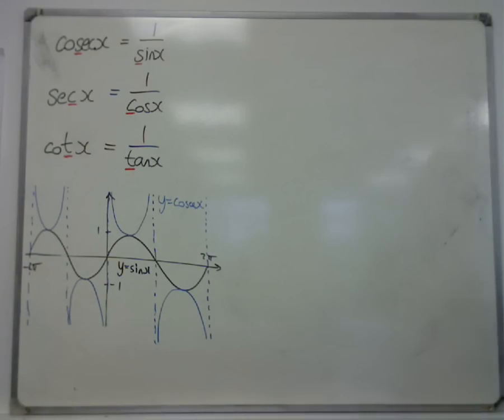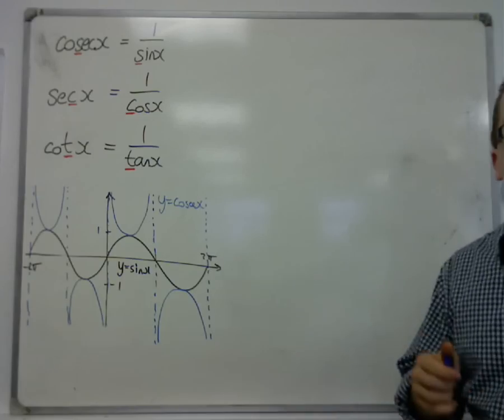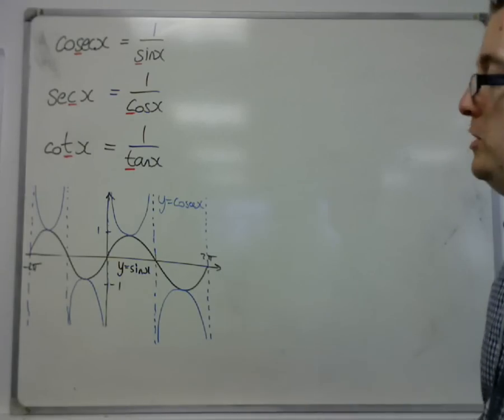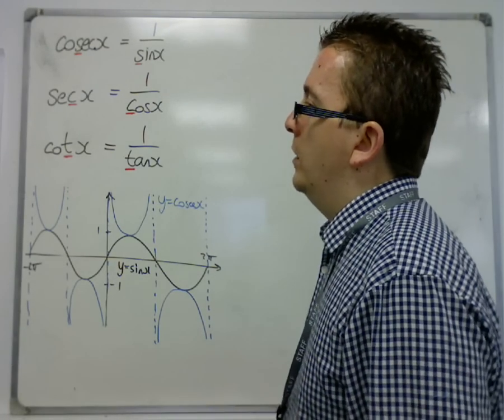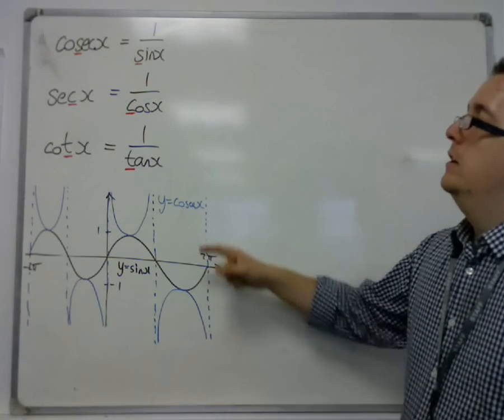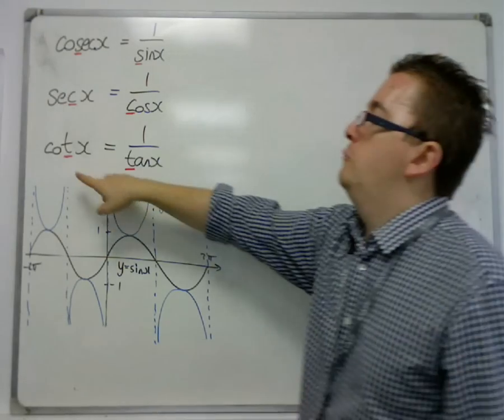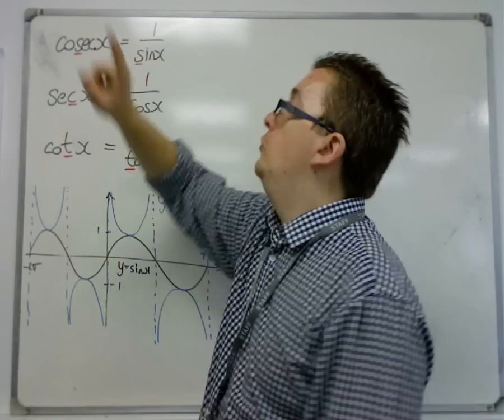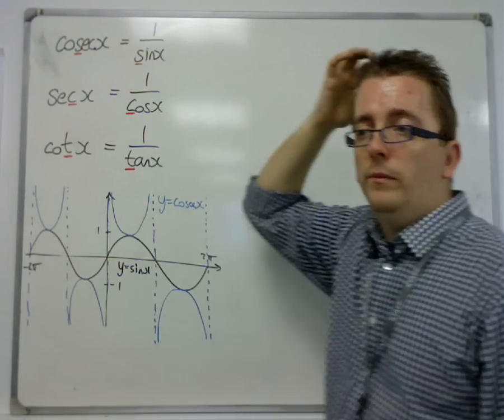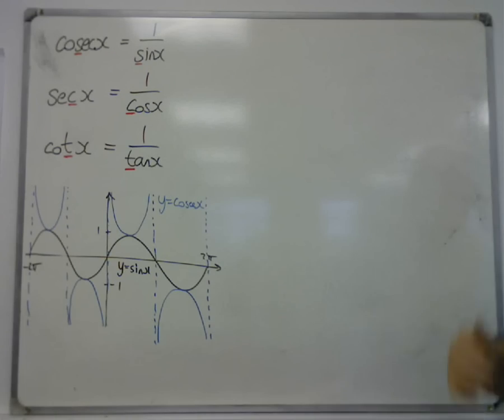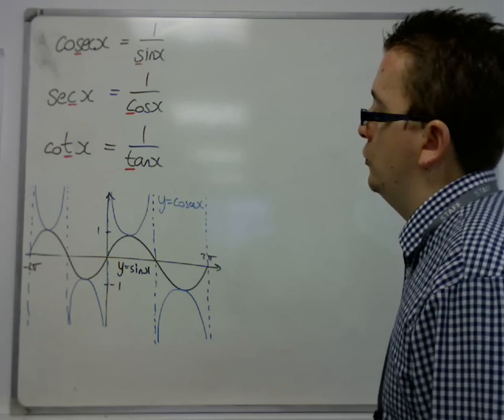A strange-looking graph, but can easily be drawn. On a graphical calculator, some don't have these as separate functions to input. Just do 1 divided by sine, or 1 divided by cosine, in order to actually sketch them.